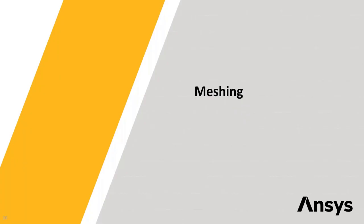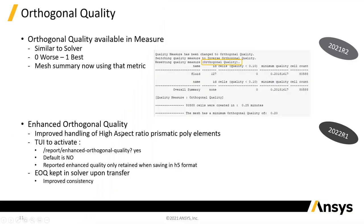Now let's talk about meshing. With meshing, there are lots of changes to features and usability issues being addressed. One area is around orthogonal quality. We know how important it is to have a good mesh, and at 2021 R2 we introduced better information about it. Even with a good orthogonal quality, you can still run into problems because there are some cell types that orthogonal quality doesn't capture. So there's a new definition called enhanced orthogonal quality.